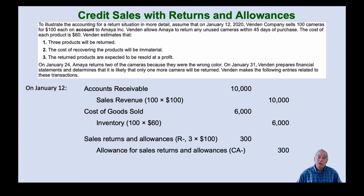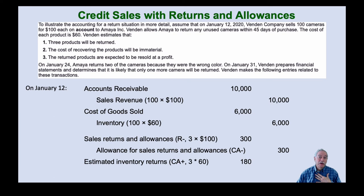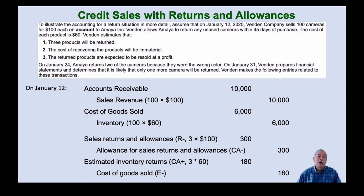We credit allowance for sales returns and allowances — a reduction in accounts receivable — for $300. We also bring onto our books an estimated asset: estimated inventory returns, for three cameras times $60, or $180. Since those cameras are expected to come back unused, we reduce cost of goods sold by $180 and record it on the balance sheet as an asset.